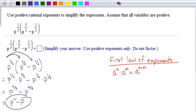And that is the answer. They asked you to simplify your answer. We did. I used positive exponents only, and our exponents are all positive, and they do not want us to factor. So p squared minus p is the answer to this question.